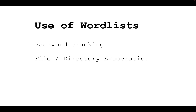Then comes file and directory enumeration. If you want to scan a website to find any hidden files, directories, subdomains, or anything like that, you can use a directory word list. Then there's brute forcing, where we try to gain access to a user account — it can be an SSH login, a web application login, or anything. You can use a word list for that as well.